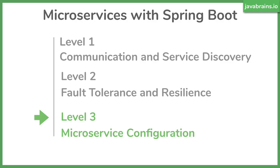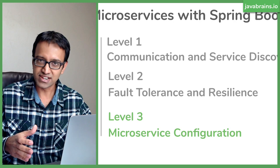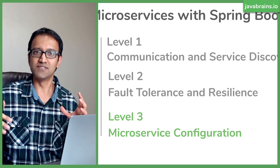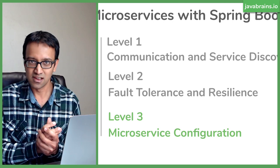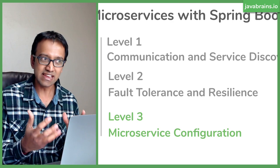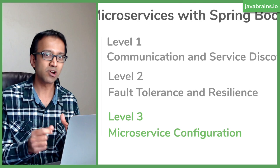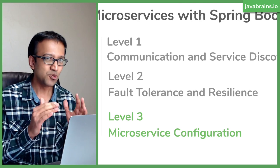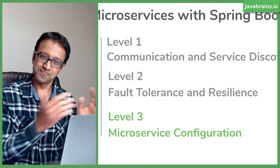As mentioned, this is level three of a series of courses. We already covered level one, which is communication and service discovery, and level two, which is fault tolerance and resilience. All these levels are available on this channel. I highly recommend watching the previous two levels before tackling level three, but it's not required. This level is a little different in that we're not going to be creating multiple services talking to each other — all we need is one Spring Boot service. We'll take that and make it configurable, so you can actually start with level three and tackle the other levels later if you'd like.